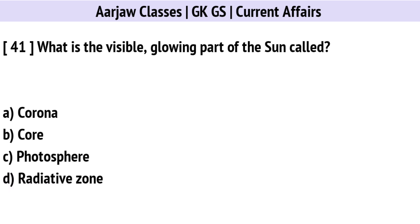What is the visible, glowing part of the Sun called? Correct option is C: The Photosphere.